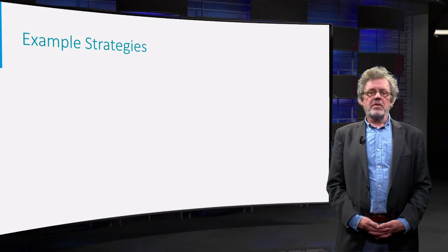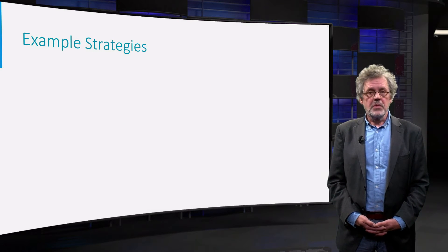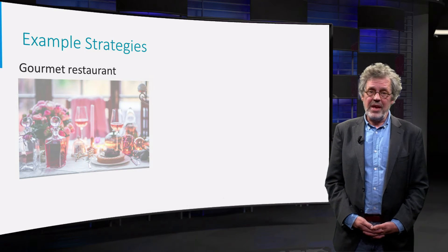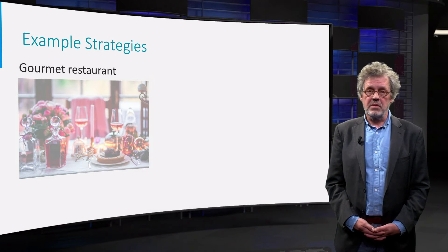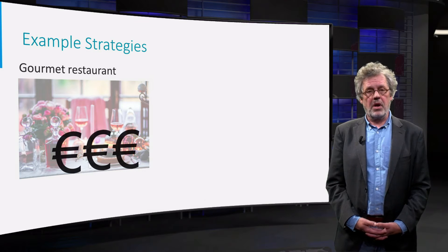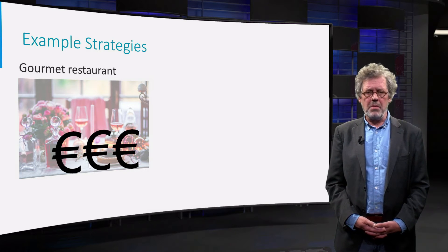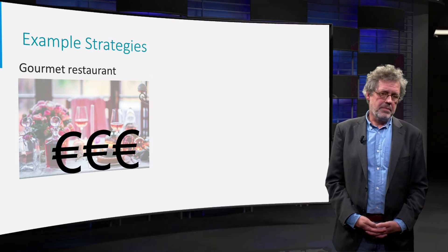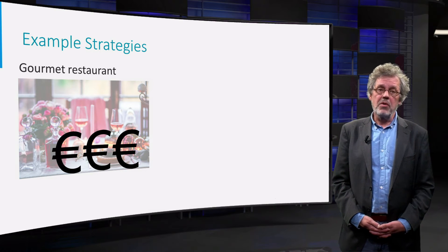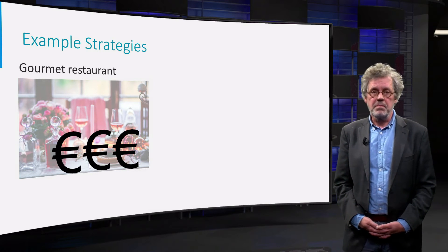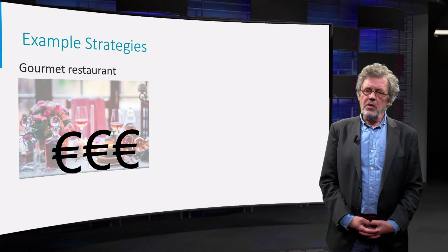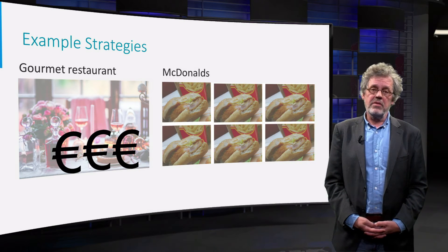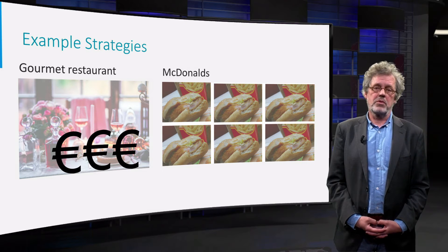To give a provocative but simple example: the strategy of a high-class gourmet restaurant is that they create a nice customer experience and target small volumes but high margins — remember the expensive bottle of wine, the same wine you can buy around the corner for a much lower price. On the other hand, you have McDonald's, whose strategy is simply low margins and high volumes.